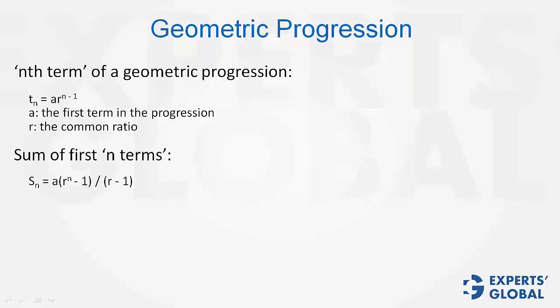The sum of first n terms is a times r to the power of n minus 1 divided by r minus 1, where a is the first term in the progression and r is the common ratio.